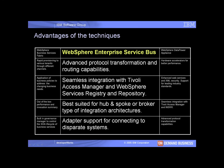In addition to what we showed in this demo, there are other advantages to using WESB. WESB offers advanced protocol transformations and routing capabilities. WESB is seamlessly integrated with Tivoli Access Manager and WebSphere Services Registry and Repository. A WESB implementation is best suited for hub-and-spoke or broker type of integration architectures and provides adapter support for connecting to disparate systems.